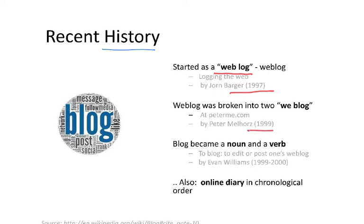Two years later, the term weblog was broken into two parts: 'we' and 'blog.' And it was in 1999-2000 that blog became both a noun and a verb. A blog is something where you have information, and to weblog means to write a blog.